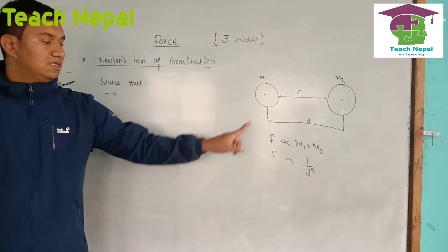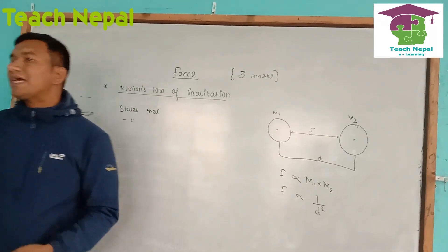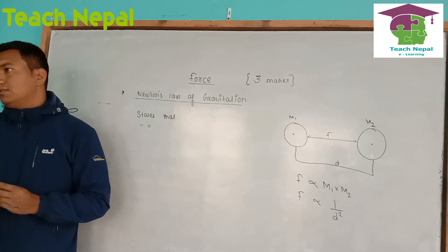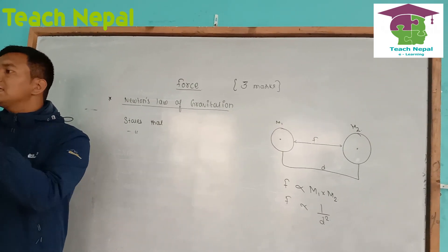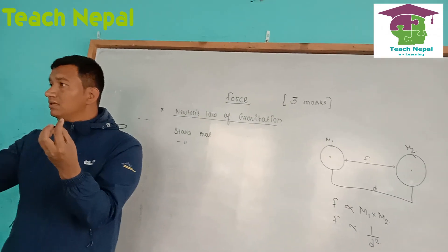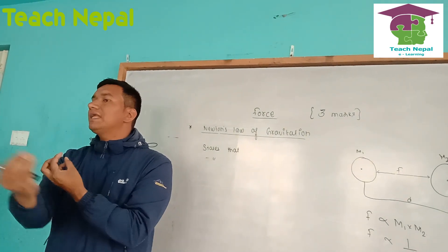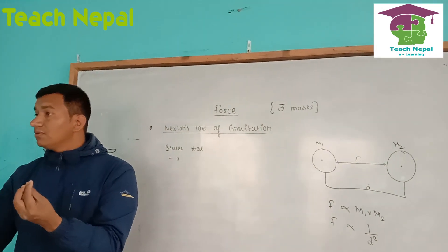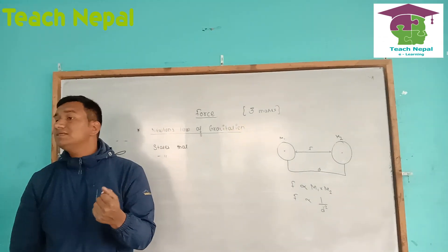This is stated by Newton's Law of Gravitation. We have experienced this force. Two heavenly objects attract each other with a force due to gravitation. One heavenly object revolves around another heavenly object.